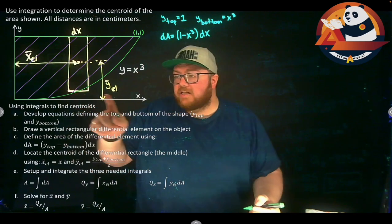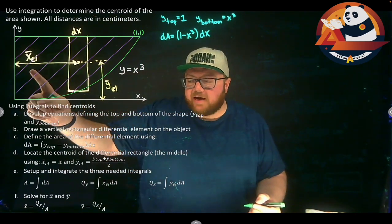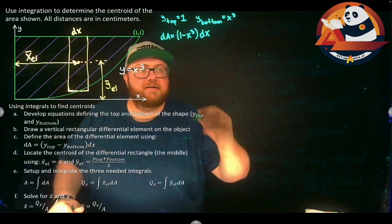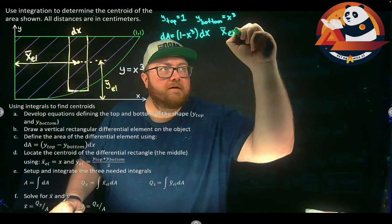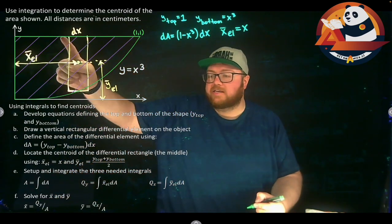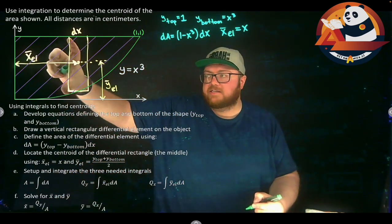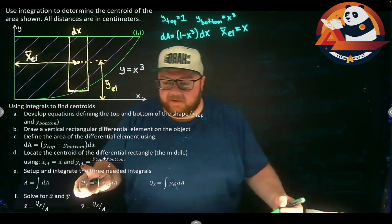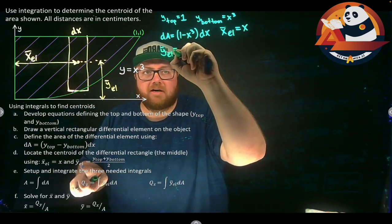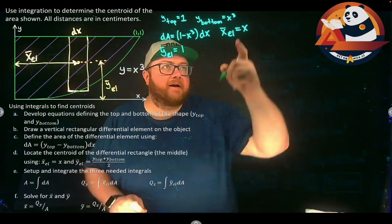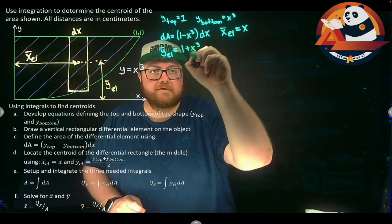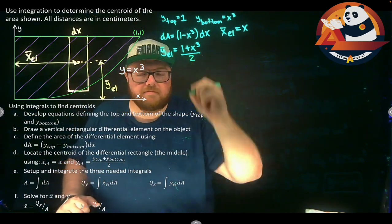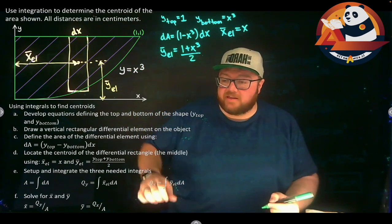We can now write equations for x̄_el and ȳ_el. Because of how we set this up, the distance in x is just x, so x̄_el equals x. For ȳ_el, we want halfway between the top and the bottom — we take their average. So ȳ_el equals (y_top + y_bottom) / 2, which is (1 + x³) / 2.